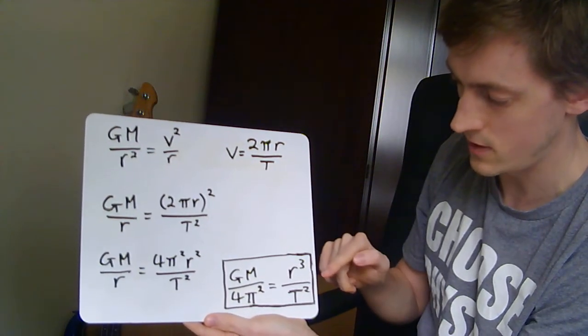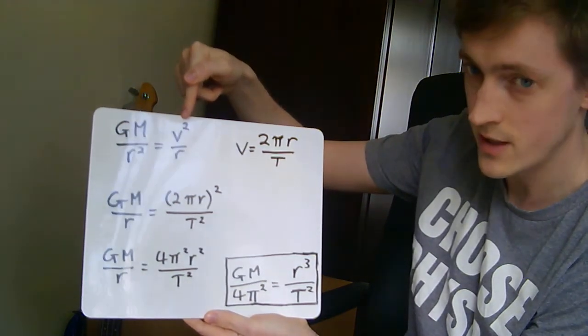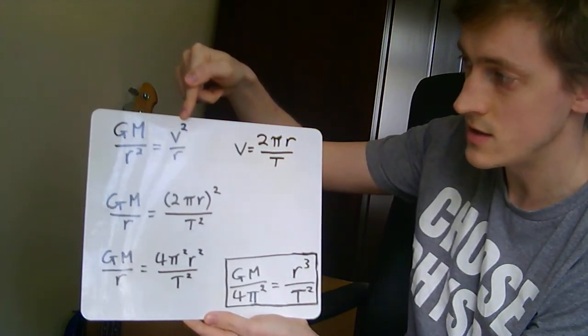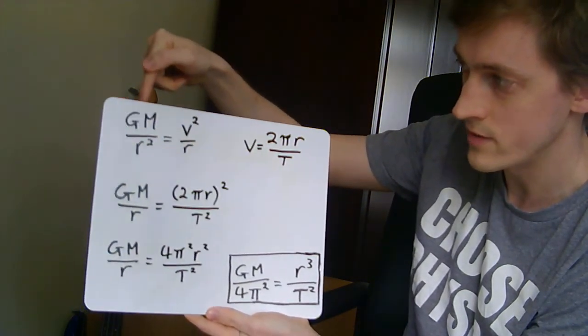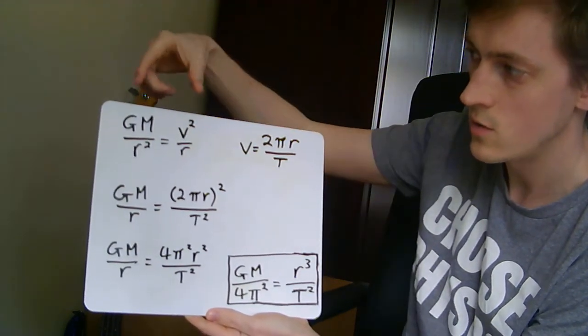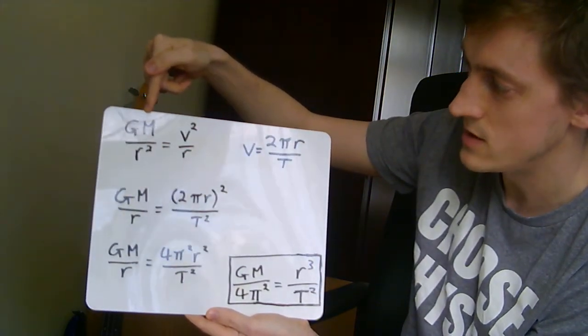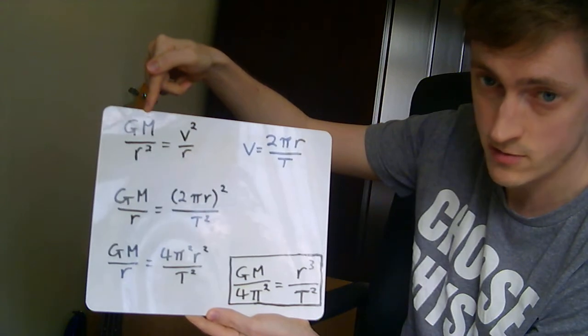It naturally comes out of the idea that the centripetal acceleration that is making these bodies go round is caused by gravity. That's this first equation. And if you rearrange it, you end up with that. Why is this a big deal? Well, this part here, this is Newton's understanding of the acceleration due to gravity.